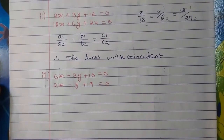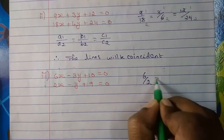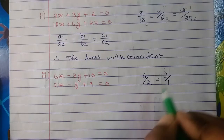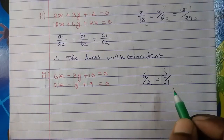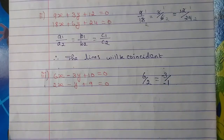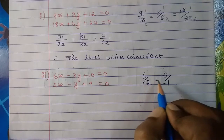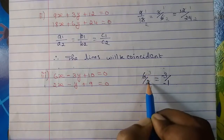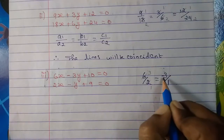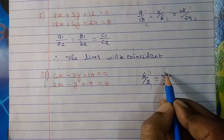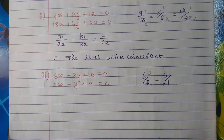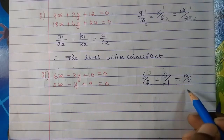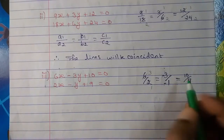Now let's do the third one. Here it is 6 upon 2, and 3 upon 1. Both are minus here. If we simplify — 3 times will become 6 — so we get 3 upon 1 for both, and the two minuses cancel. Here also 3 upon 1, here also 3 upon 1. Now let's compare the last one — this is 10 upon 9. So this is 10 and this is 9. Can we simplify this? No. So that means this is not equal.